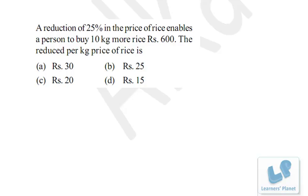If price is 3/4, then consumption can be made 4/3. Just like if price is half, consumption can be doubled. So if price is 3/4, consumption becomes 4/3 — which is 1 plus 1/3, meaning 1/3 extra.